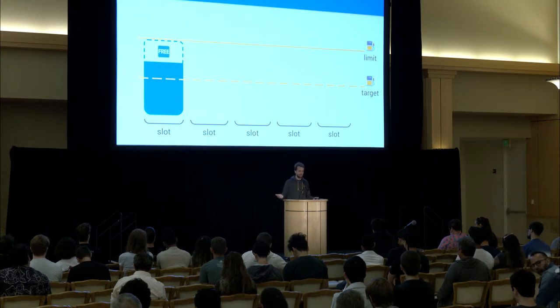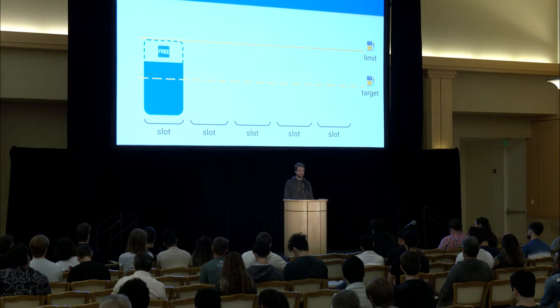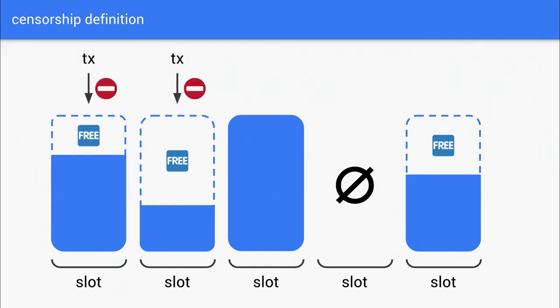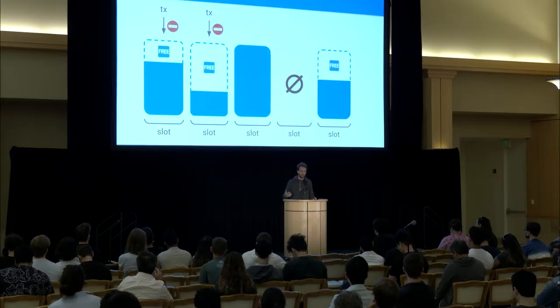There's a statistic I looked up: 80% of blocks have at least 1 million gas unused, and 1 million gas is enough to put through even some fairly large transactions. So we have this free space. If there's free space and simultaneously a transaction is pending in the mempool and not making it on-chain, that's a sign of censorship. As a builder, there's no reason not to include a fee-paying transaction when you have free space. Censorship is simply the non-inclusion of transactions when there is available space.